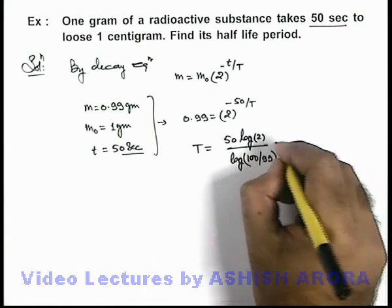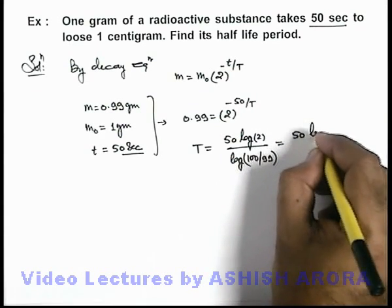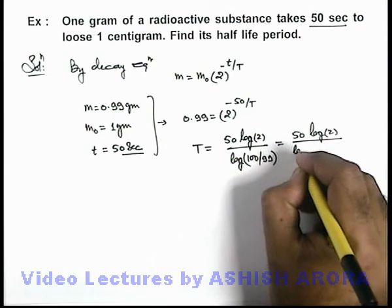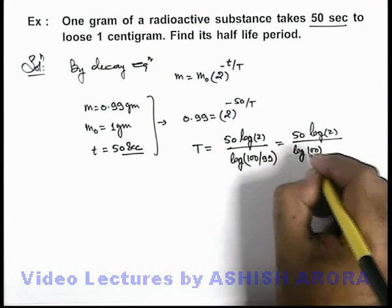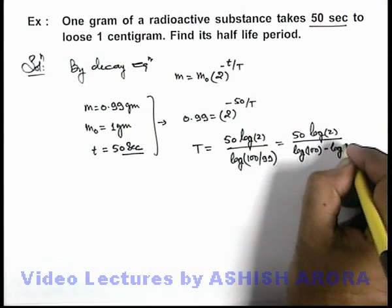And this can be further numerically simplified as 50log(2) divided by log(100) minus log(99).